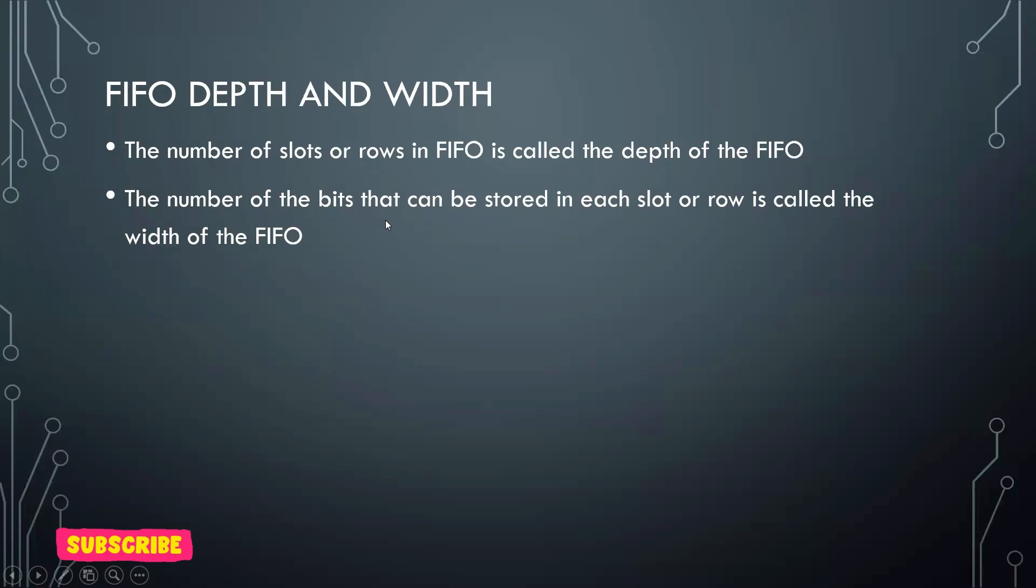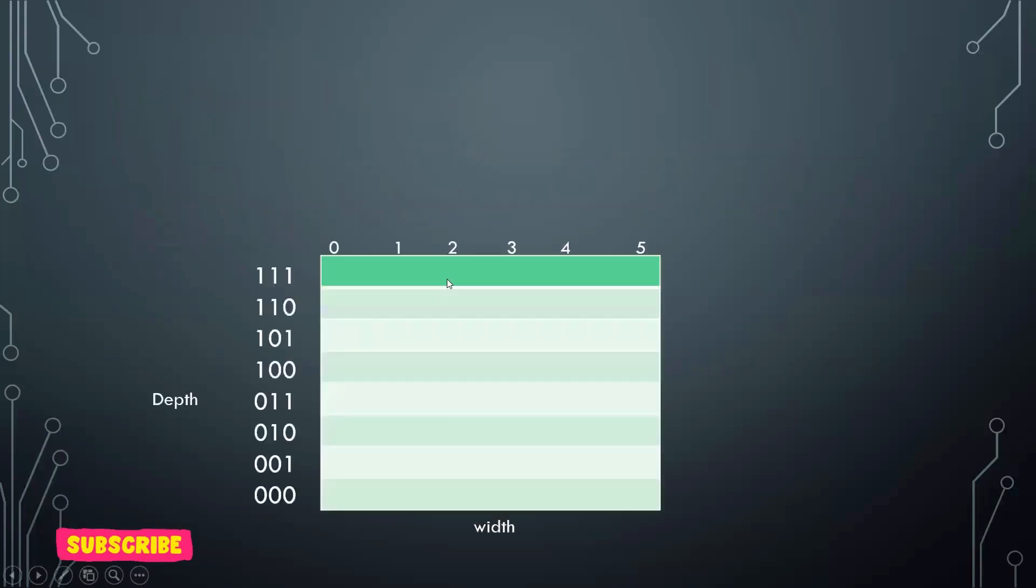The number of bits that can be stored in each slot or row is called the width of the FIFO. To make it more clear, we will see this figure. You can see here, this is the depth. These are the address locations which we have in this FIFO. It is from 0 to 7, so 8 is the depth.